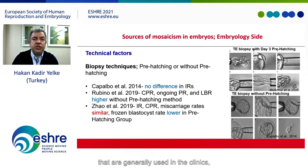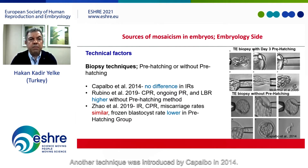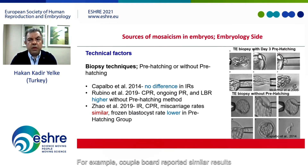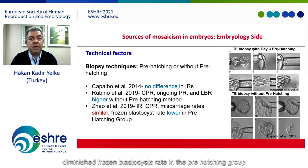There are two techniques generally used in clinics, as described by MacArthur. The first is called the pre-hatching method, in which zona pellucida opening is performed on day three or four. Another technique was introduced by Kapalbo et al. in 2014, for which zona pellucida drilling is not required during cleavage stage. Different clinical outcomes were reported for both methods. Kapalbo reported similar results; Rubio found higher pregnancy and live birth rates in the non-prehatching group, while Zaha found no difference except diminished frozen blastocyst rate in the day three prehatching group.